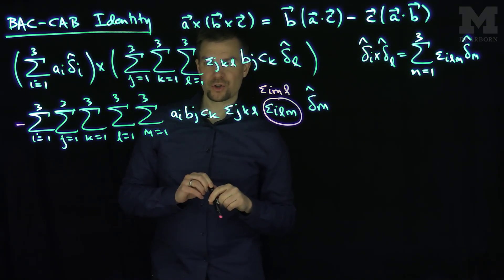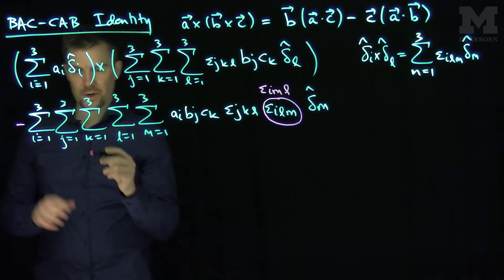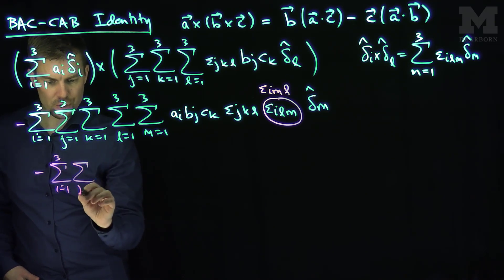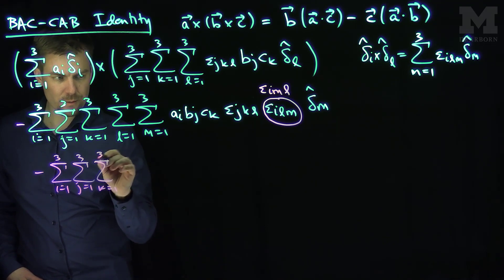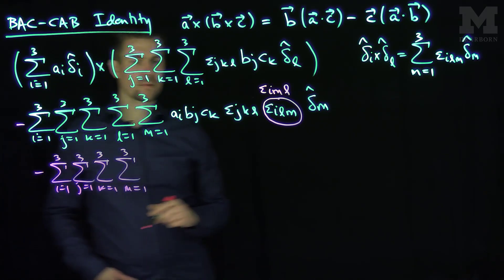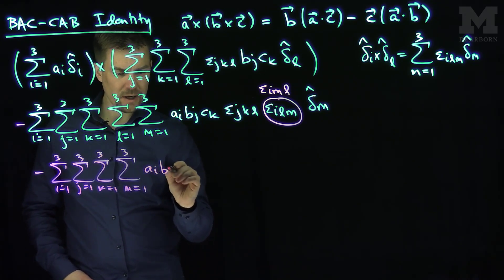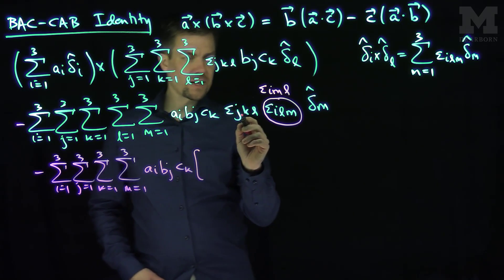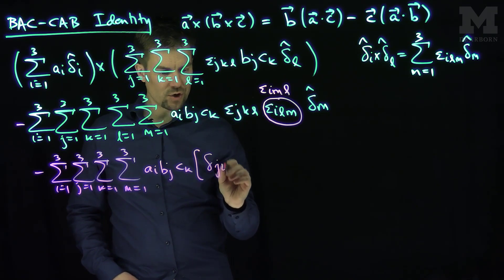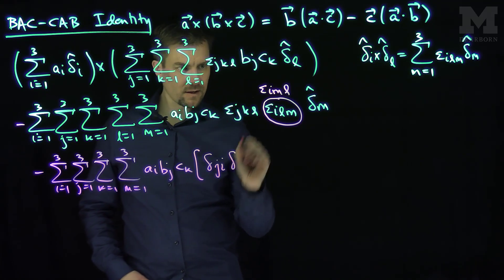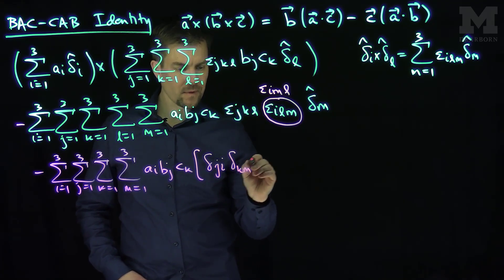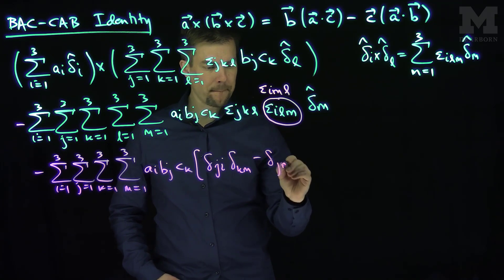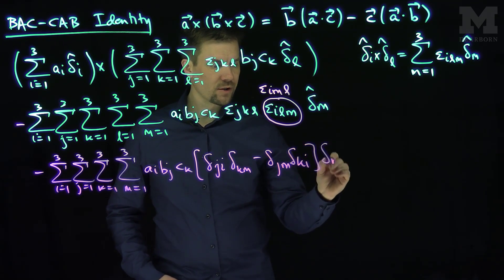Now we apply match-mismatch over l, eliminating the l summation. We get minus the sum over i, j, k, m from 1 to 3 each, of a_i b_j c_k times the match-mismatch result, which gives: (delta-ji times delta-km minus delta-jm times delta-ki) in the direction of delta-m hat.